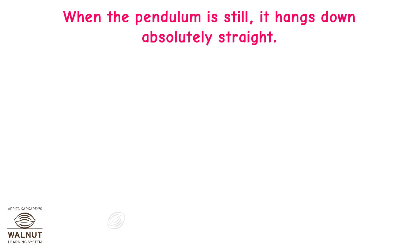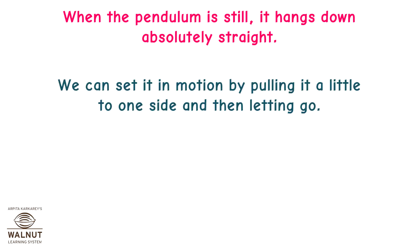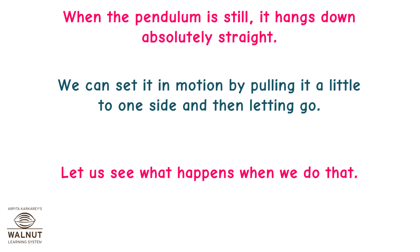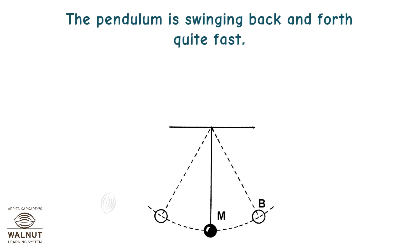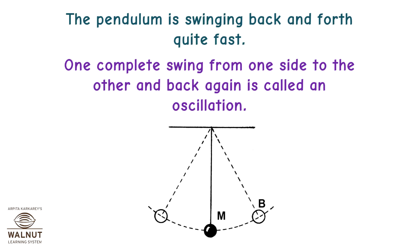When the pendulum is still, it hangs down absolutely straight. We can set it in motion by pulling it a little to one side and then letting go. Do you remember what this motion is called? It is called vibration. The pendulum is swinging back and forth quite fast. One complete swing from one side to the other and back again is called an oscillation.